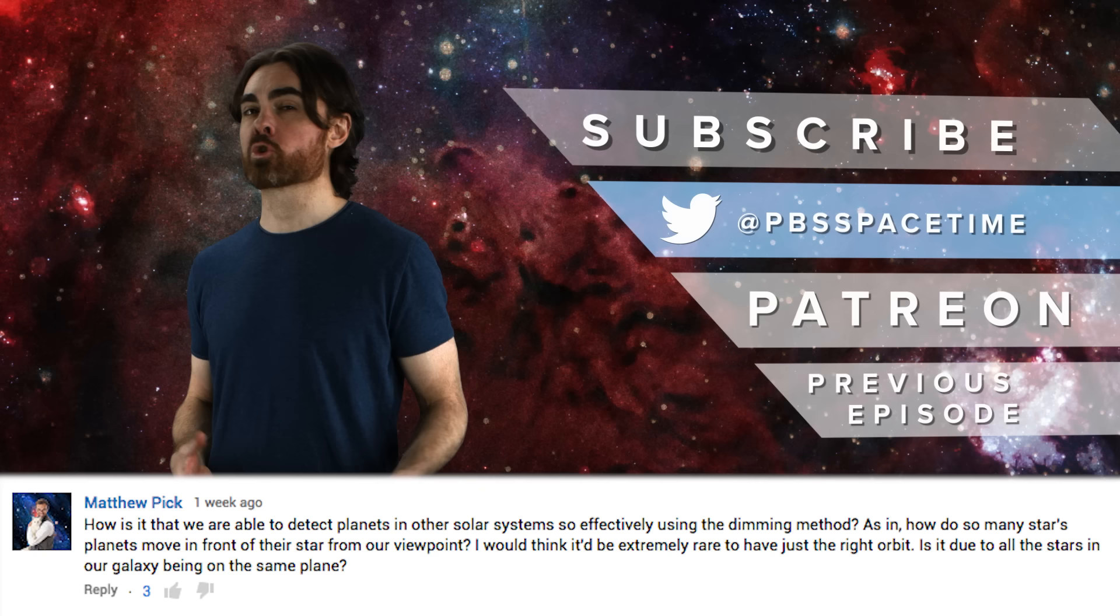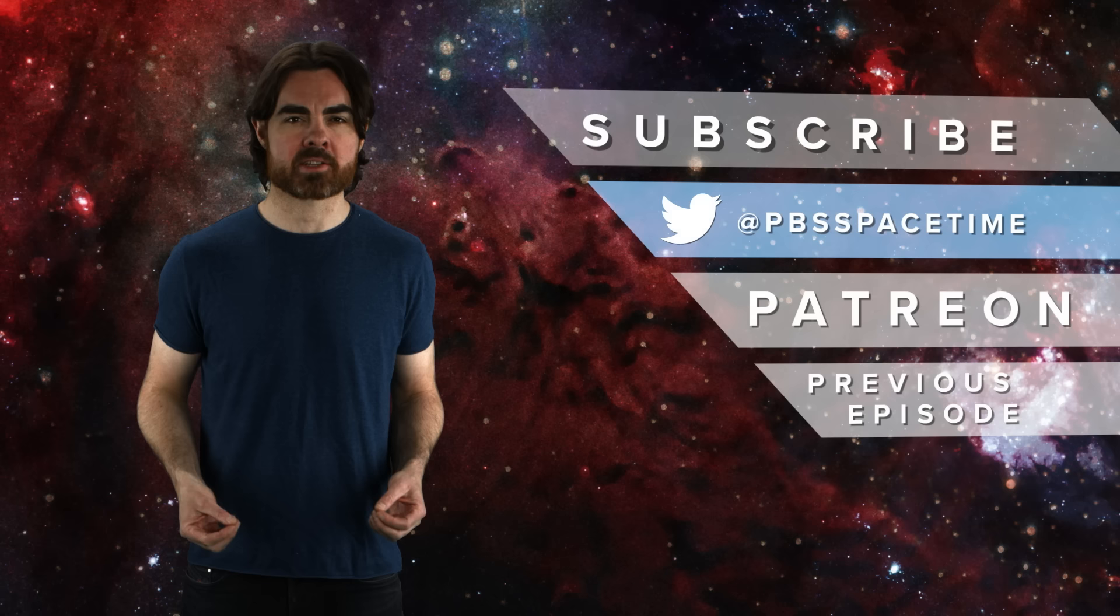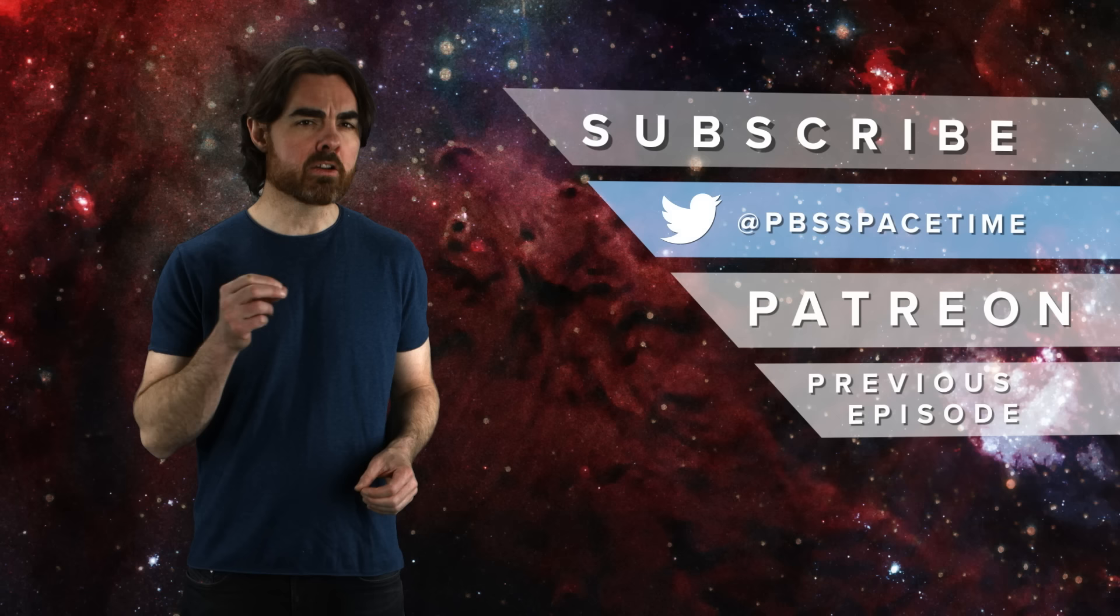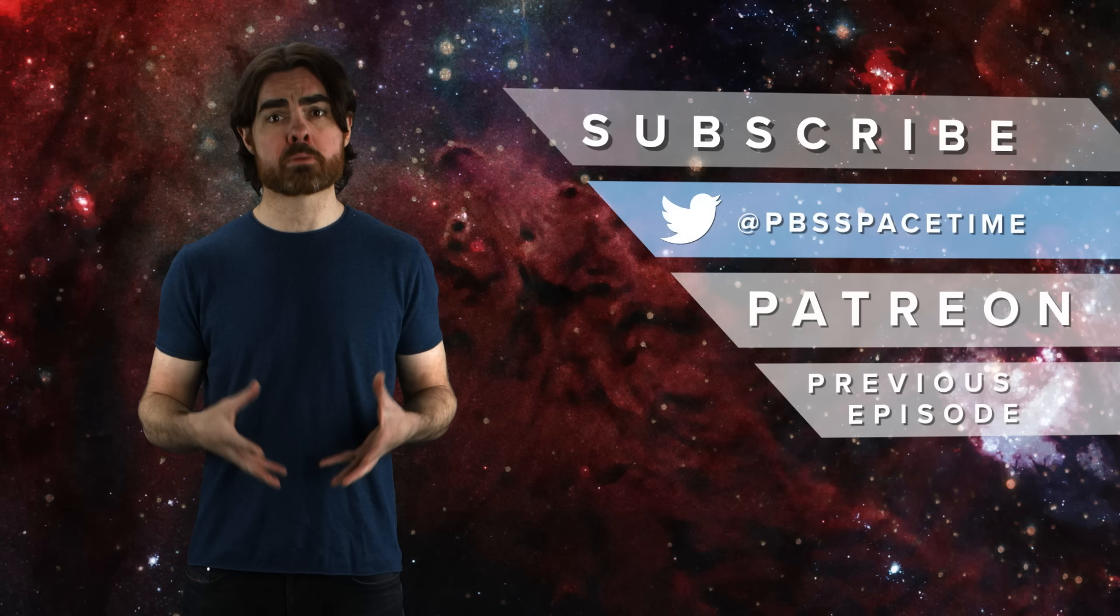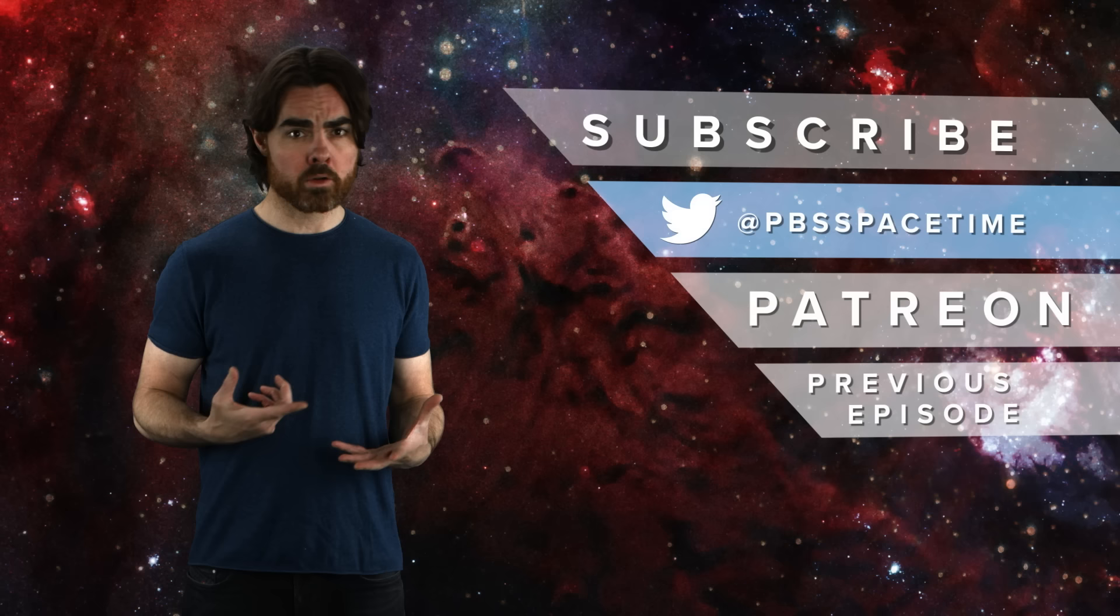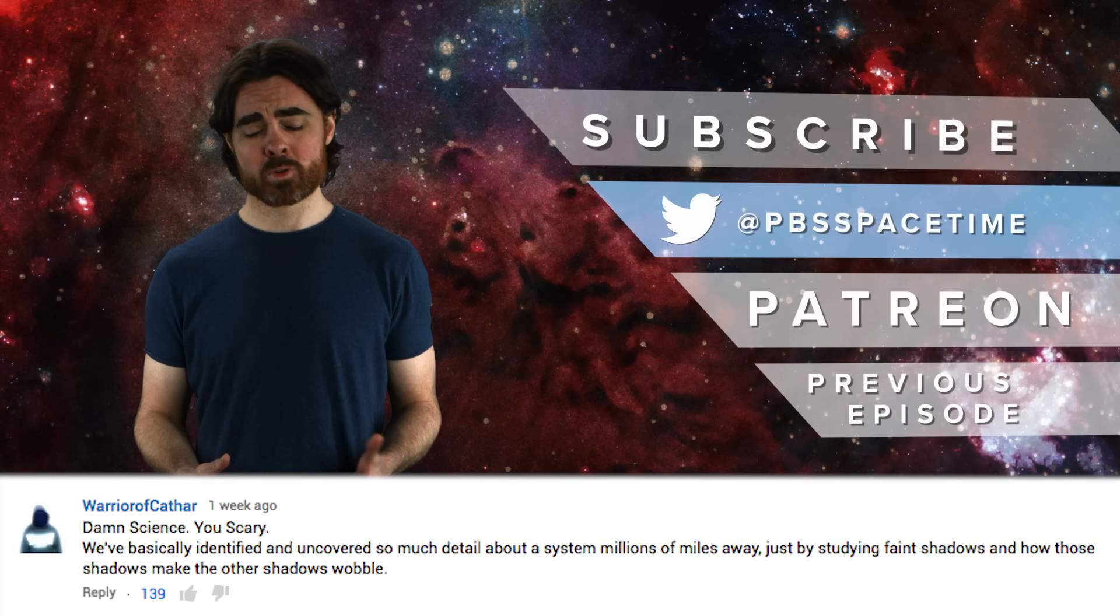Matthew Pick asks about the transit method and wonders how rare it is for a planetary system to be lined up so we actually see the transit. The answer is that, yeah, it's rare, but there are a lot of stars in the galaxy. The Kepler Space Telescope has so far discovered 2,330 confirmed exoplanets in 578 planetary systems. That's 578 stars out of the 100,000 stars that Kepler monitors. That gives you an idea of the average probability of alignment. But not all of those will have planets. Yet it's estimated that a system with an Earth-like planet orbiting a Sun-like star has around a 1% chance of transiting from our perspective.